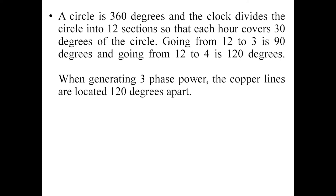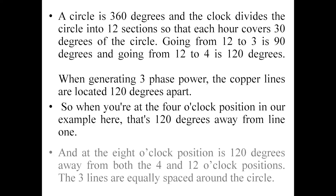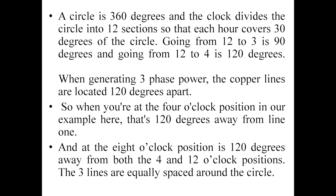So when generating three-phase power, the copper lines are located exactly 120 degrees apart. Line 1 is at 12 o'clock, Line 2 at 4 o'clock, and Line 3 at 8 o'clock. When you are at the 4 o'clock position, that is exactly 120 degrees away from 1, and at the 8 o'clock position, it is 120 degrees away from both 4 and 12 o'clock. These three lines are equally spaced around the circle. That is why I am using the clock as an example.